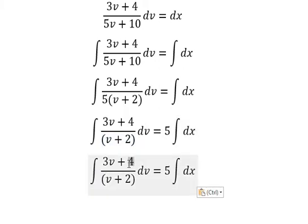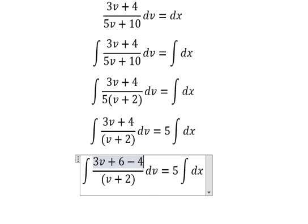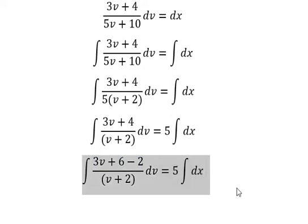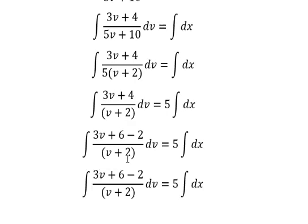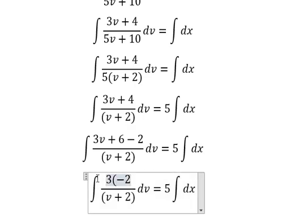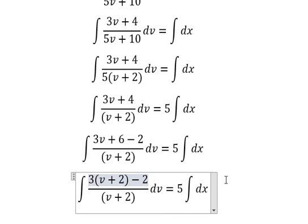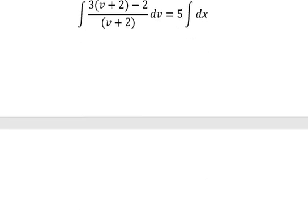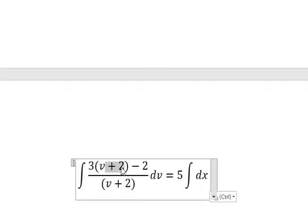So about number 4, I can put into 6 minus 2 because I want to create the factor divided by v plus 2. So this one, we will have about 3 multiplied by v plus 2. This one divided by this one, we have number 3.